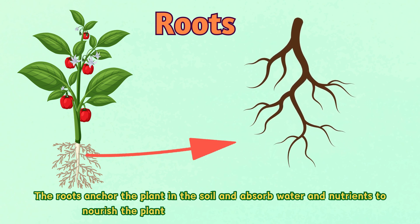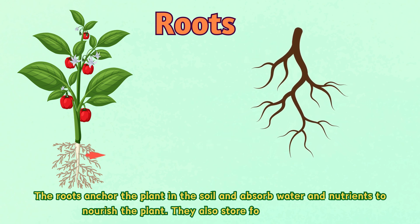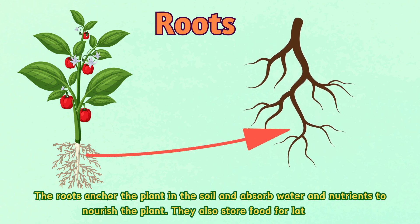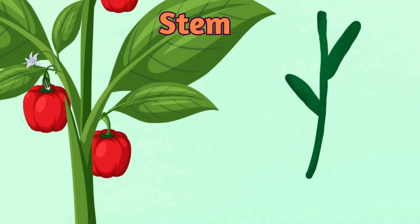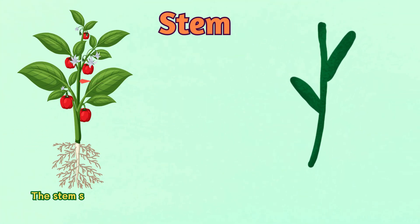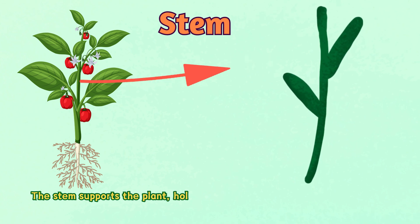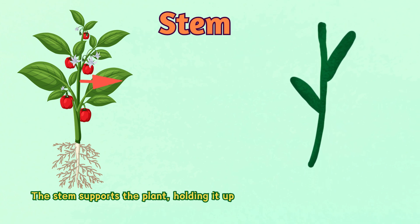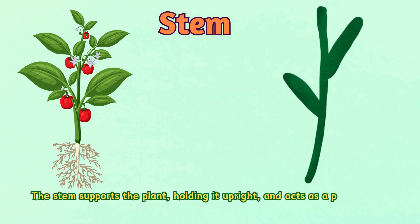They also store food for later use. Number two: stem. The stem supports the plant, holding it upright, and acts as a pathway for water, nutrients, and sugars to travel between the roots and leaves.